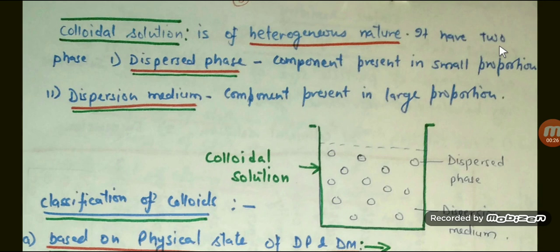In a solution we have two types of components: solute and solvent. In colloidal solutions we call them disperse phase and dispersion medium. The component which is present in large proportion is called dispersion medium, and the component which is present in small proportion is called disperse phase. These are disperse phase particles, which you can say solute, or dispersion medium, which you can say solvent.